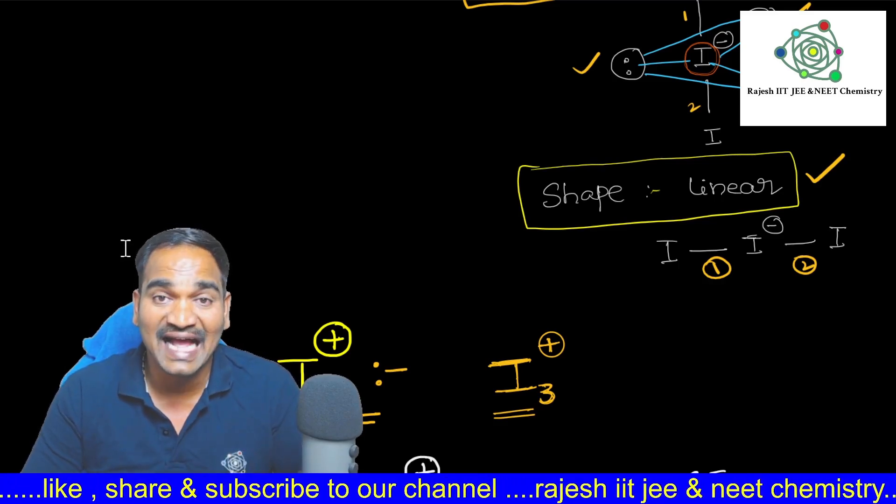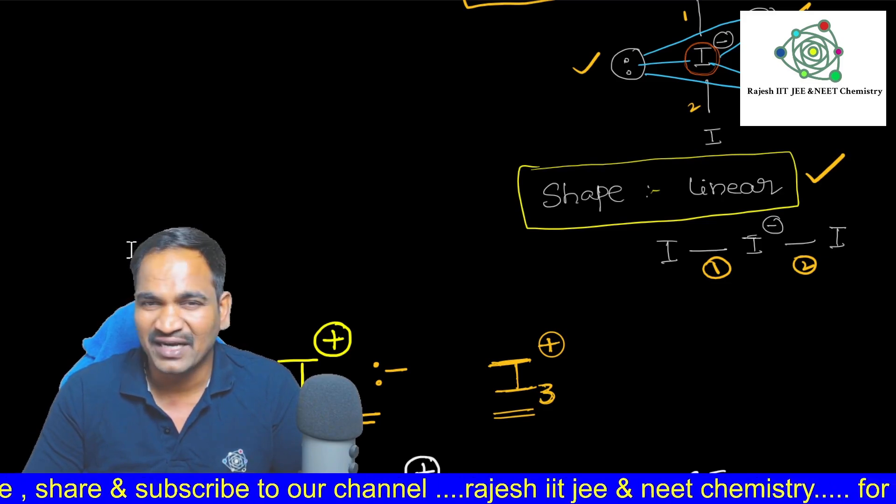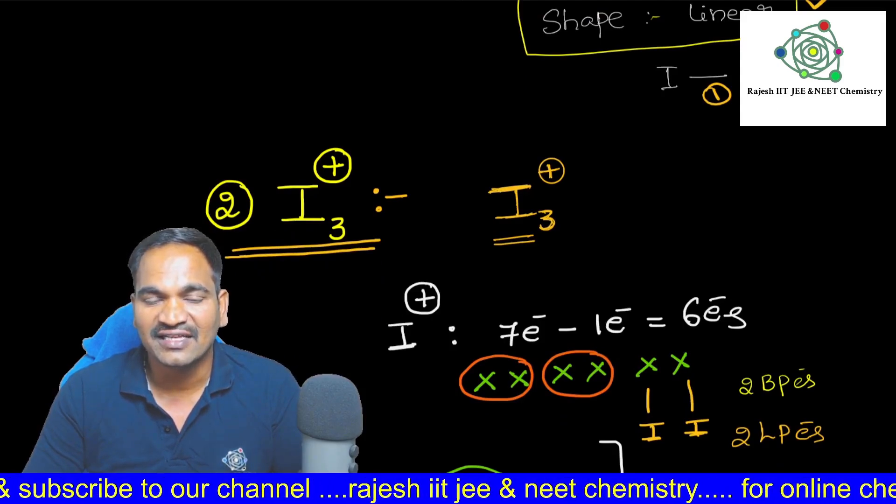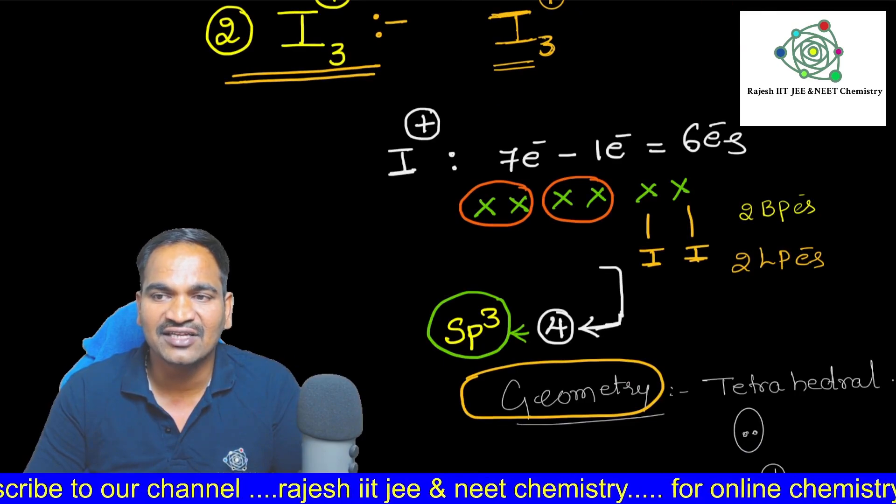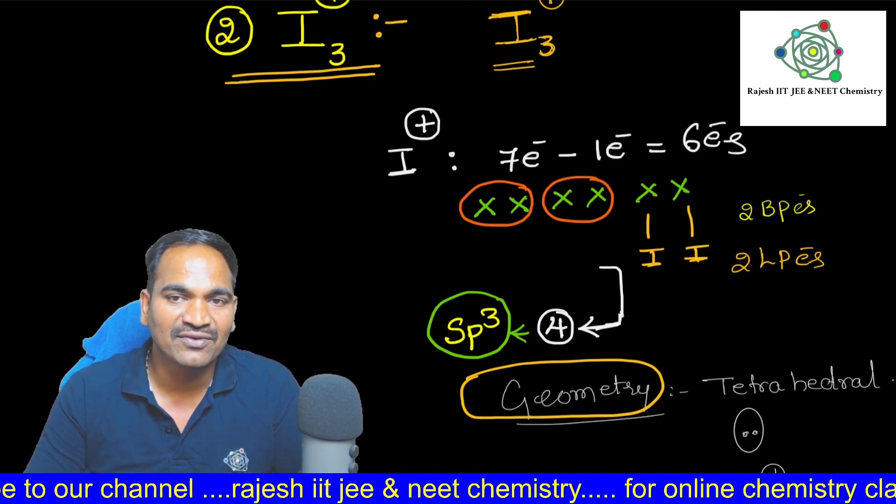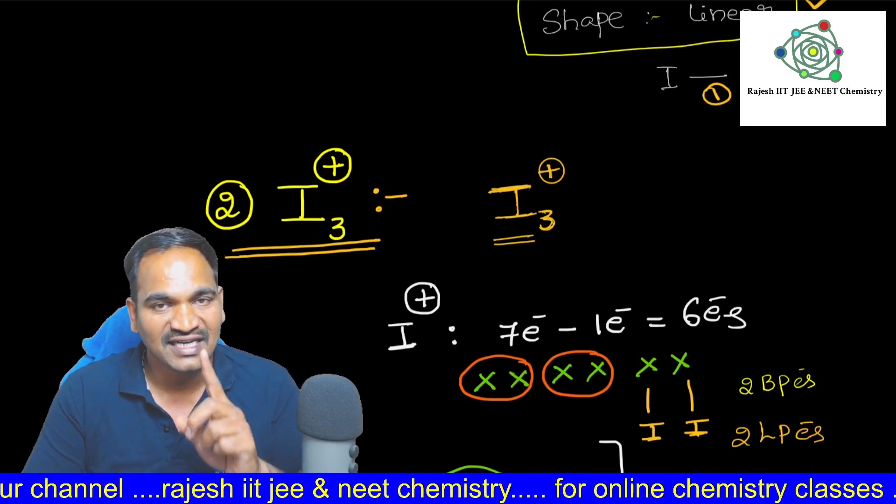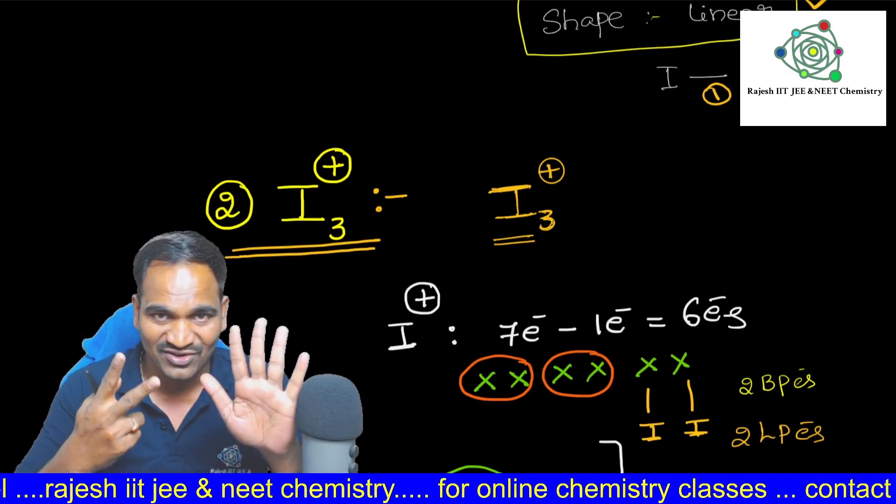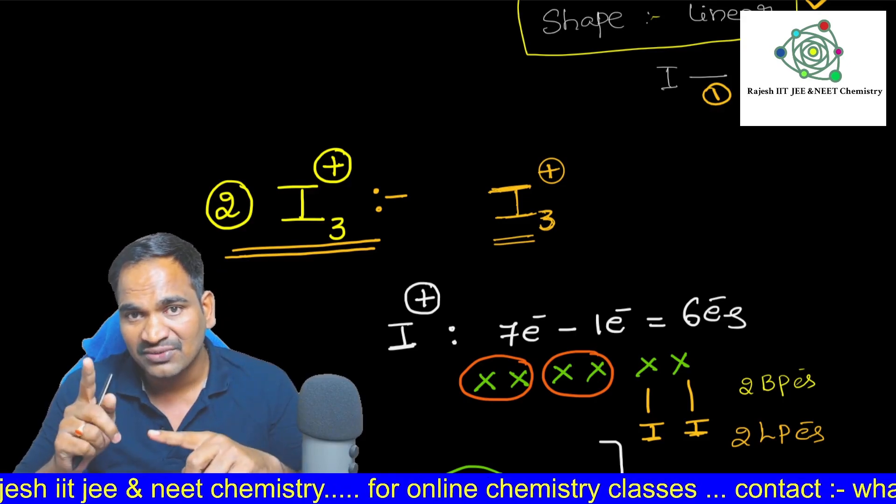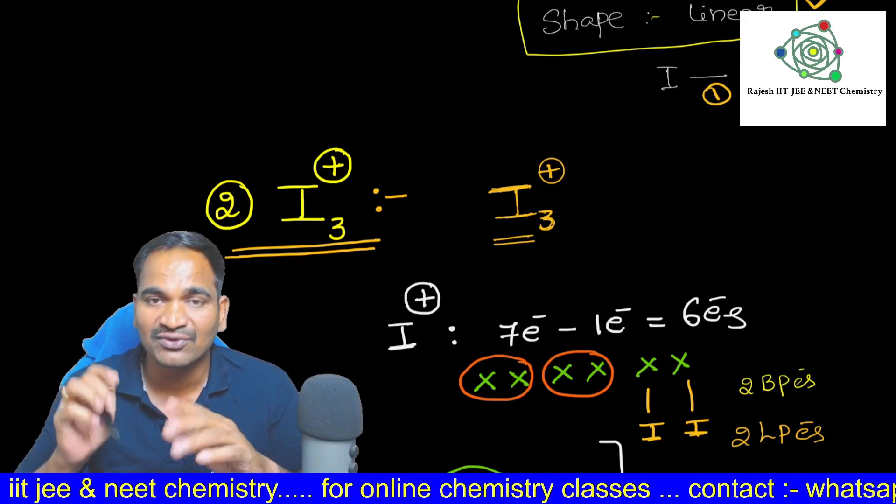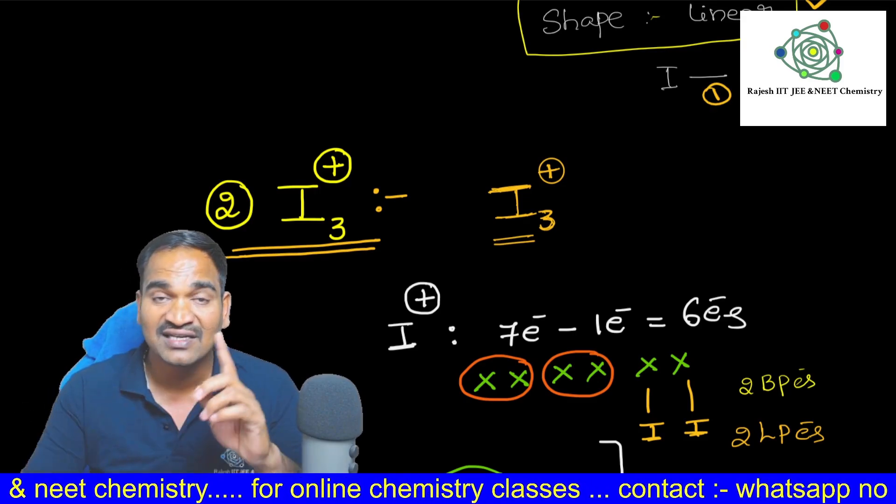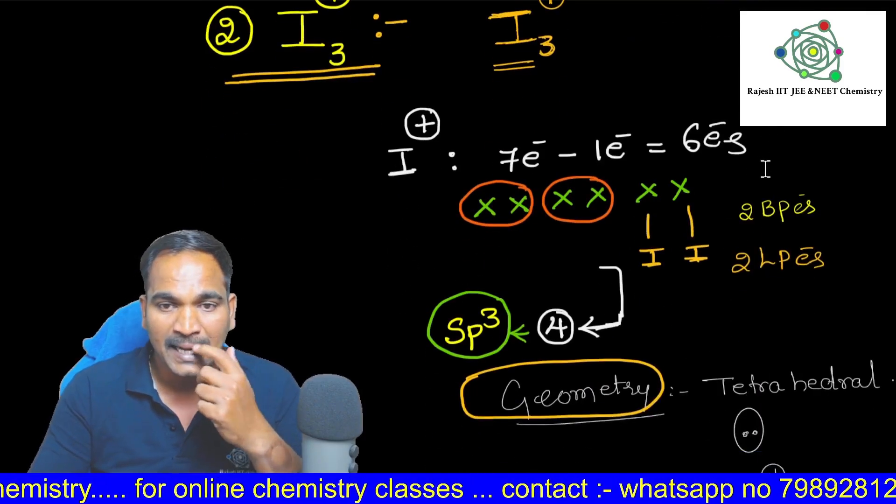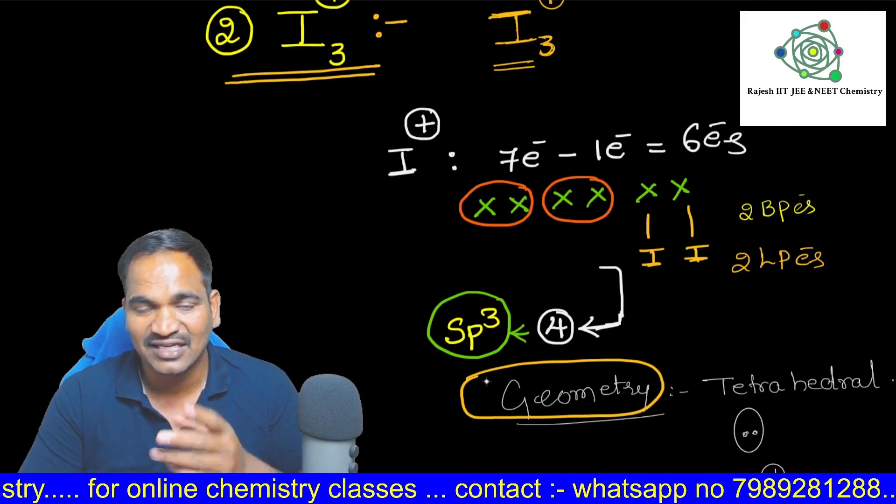We have to go for the I3 plus. Now hybridization, geometry, shape we will discuss. Here in the I3 plus, what do we have to do? Just focus. I3 plus, central atom iodine, but here positive charge is there. Iodine will contain 7 electrons. But positive charge means we have to remove an electron. That means 7 minus 1, 6 electrons will be on the central atom. Here you see this, I wrote 6x, that means 6 electrons here.